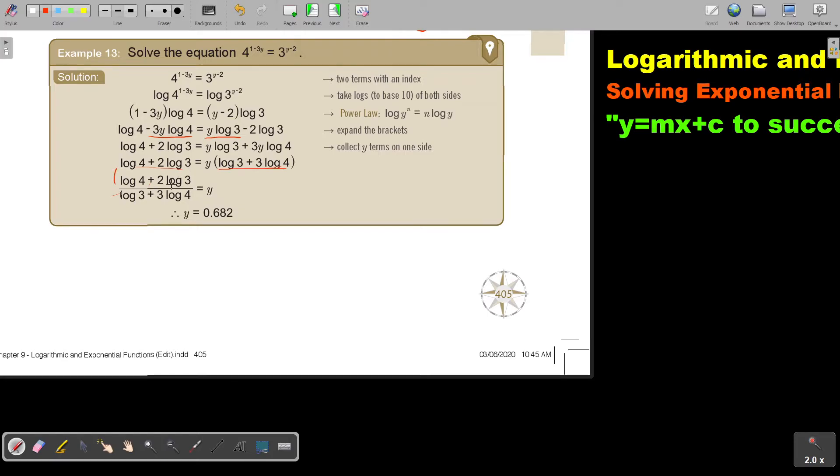I just press on my calculator. Put a bracket. Press log 4, or bracket, log 4 plus 2 log 3. I'm going to do it just to check with you. You can say log 4 plus—you don't even have to press that multiply—2 log 3, close the bracket, divide, bracket, log 3 plus 3 log 4, close the bracket, equals. And I get three significant figures: 0.682. 100% correct.